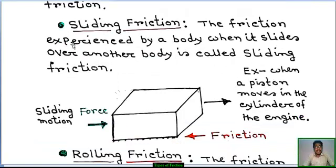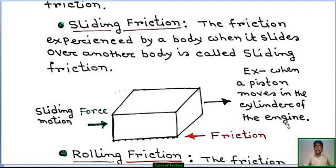What is sliding friction? The friction experienced by a body when it slides over another body is called sliding friction. Example: when a piston moves in the cylinder of an engine, it is sliding friction. This is a block placed on a horizontal rough surface.